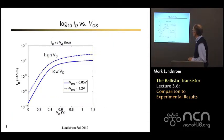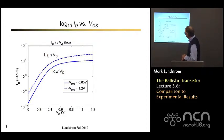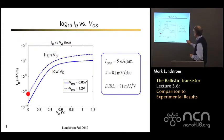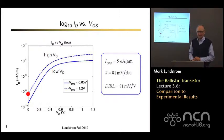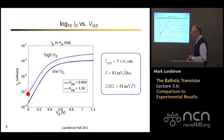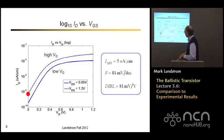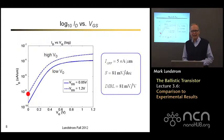Looking at the transfer characteristics on a log plot at low and high VD, the off-current is actually pretty low at 5 nanoamps per micrometer of width. The sub-threshold swing, deduced from the slope, is 81 millivolts per decade, which is a good sub-threshold swing. The DIBL is also a good value, less than 100 millivolts per volt. So this is a well-behaved transistor.